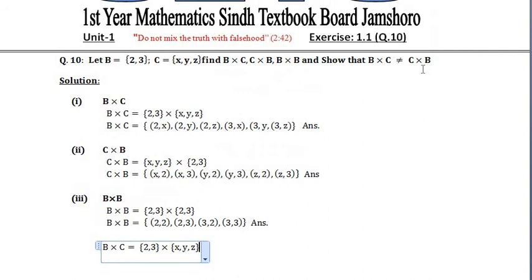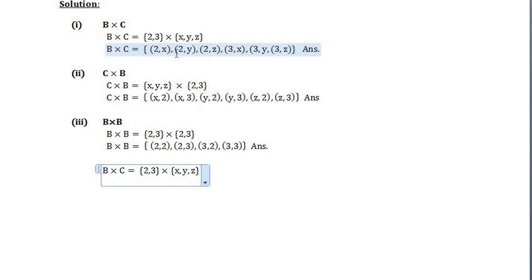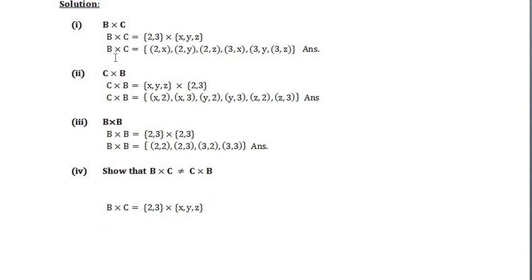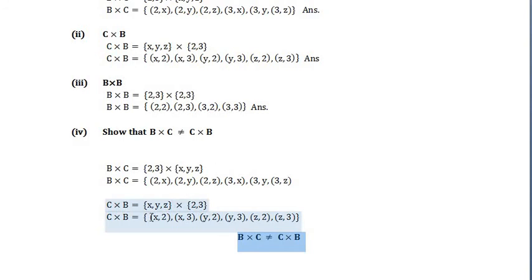Now we have to show that B cross C is not equal to C cross B. If you compare both answers, you can see that the answers are different. The answer of B cross C is not equal to the answer of C cross B, so that's why we can say that B cross C is not equal to C cross B.